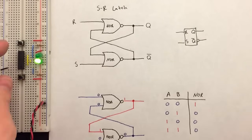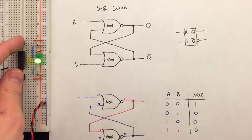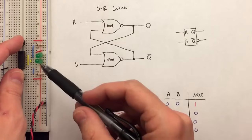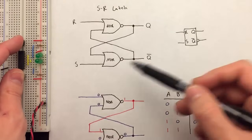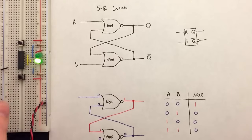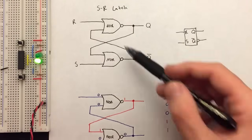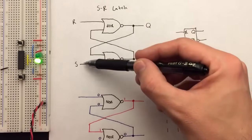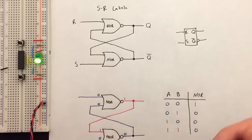You might be wondering what happens if you input a one on both set and reset at the same time. In that case, both Q and not-Q go low. This is sometimes referred to as an invalid state, because if you're using this as a set-reset latch you should only be setting it or resetting it at any point in time — not both simultaneously.